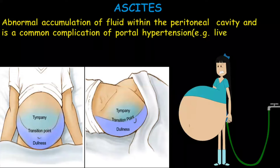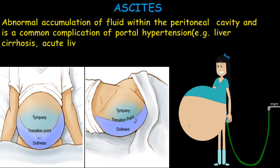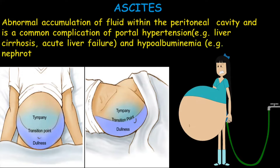Portal hypertension is due to liver cirrhosis and acute liver failure. Portal hypertension is a condition of increased portal venous pressure, which is normally 5 to 10 mmHg. This increase happens due to pre-hepatic, post-hepatic, and hepatic causes. In pre-hepatic we have portal vein thrombosis; in hepatic we have liver cirrhosis; and in post-hepatic we have right-sided heart failure.